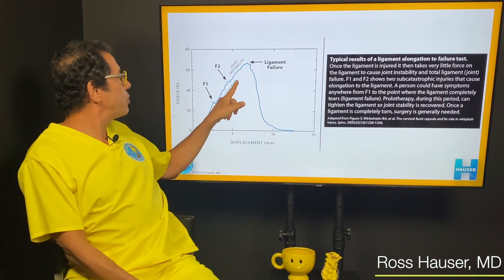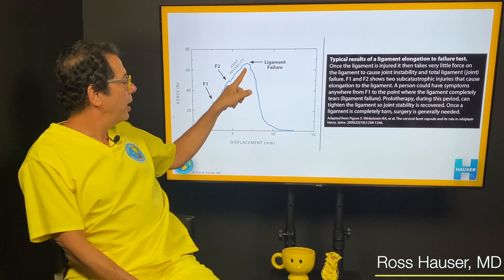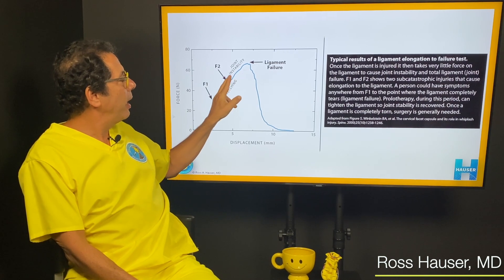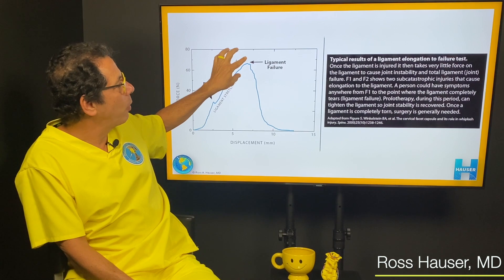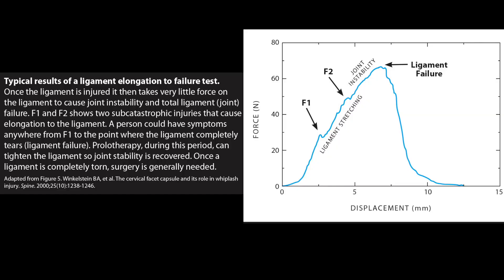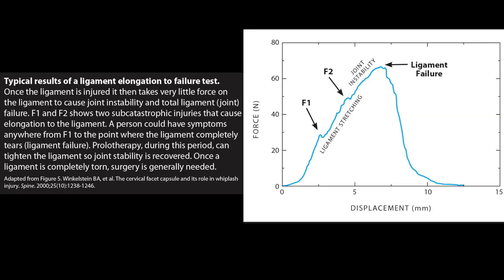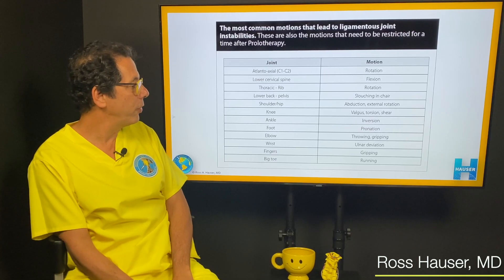As the ligament stretches, at some point it's going to start to give — that's the prolotherapy zone. But if you don't get it treated, the ligament is going to fail and tear. Once the ligament starts getting stretched and torn a little, that's the prolotherapy zone. But when it's torn completely — like an ACL — that's when you would often need surgery.